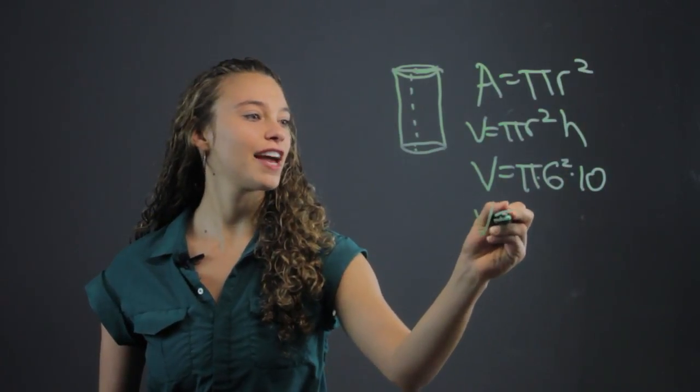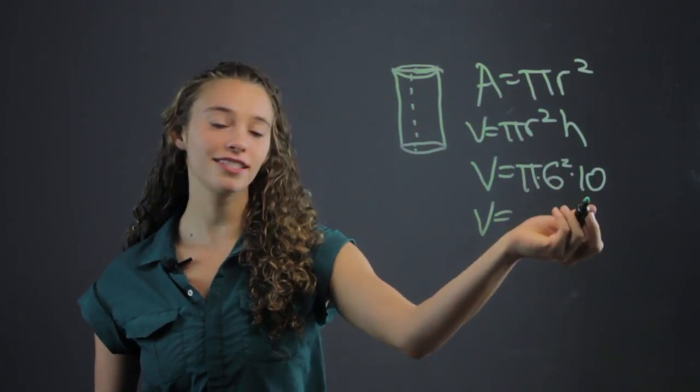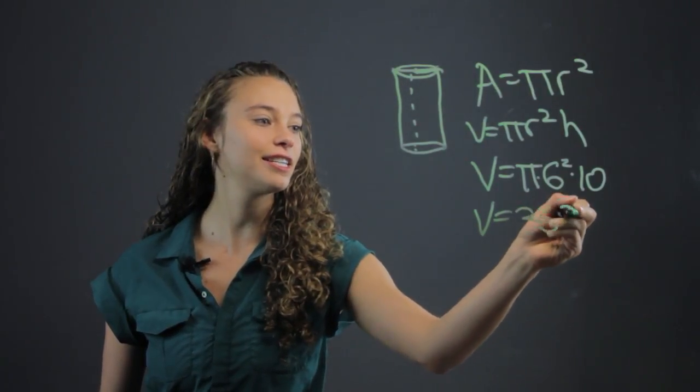Okay, then we just simplify that out. 6 squared is 36 times 10 is 360. So we get 360 pi.